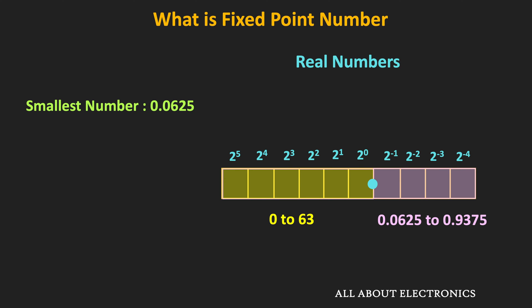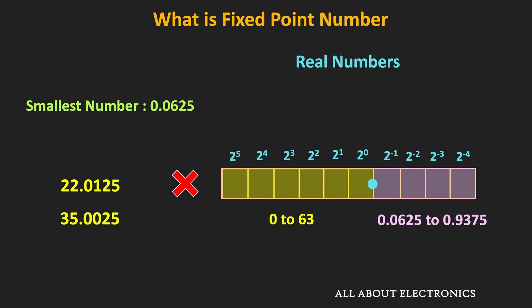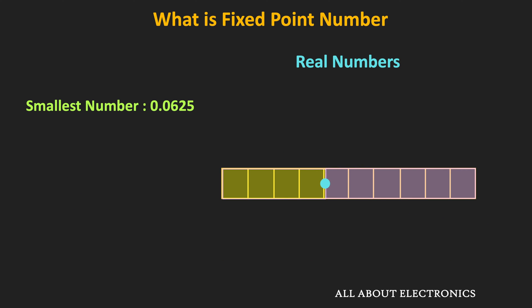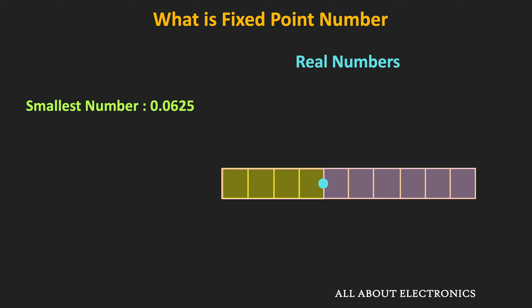For example, if we want to represent 22.0125 or 35.0025, we cannot represent these in this 10-bit fixed point representation. If we want to represent such smaller numbers, then we need to assign more bits for the fractional part, like 5 or 6 bits. By doing so we can increase the precision, but our range will get compromised. For example, with only 4 bits for the integer part, we can represent any number between 0 to 15. That means in fixed point representation, once the location of the radix point is fixed, our range and precision are also fixed.